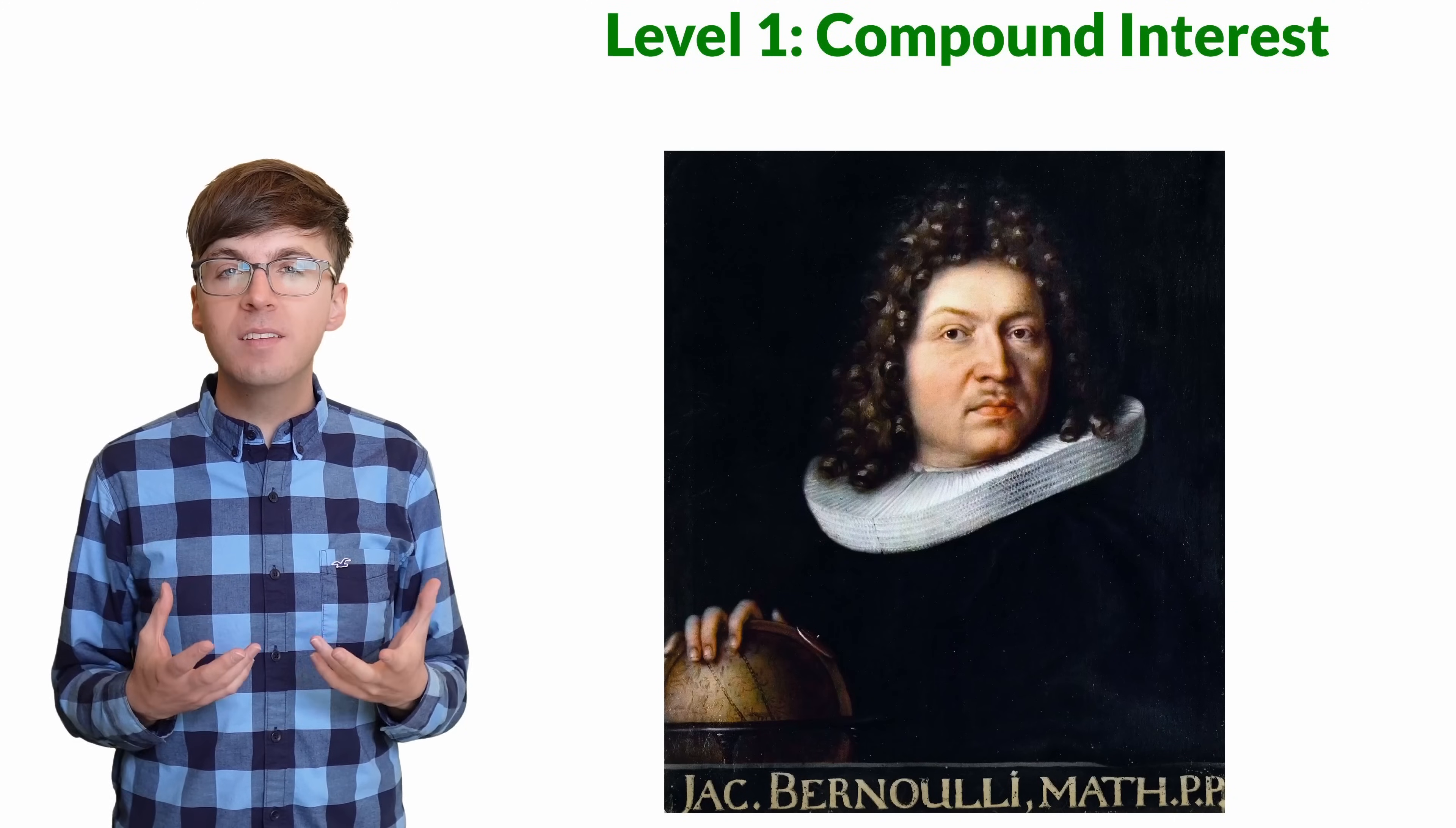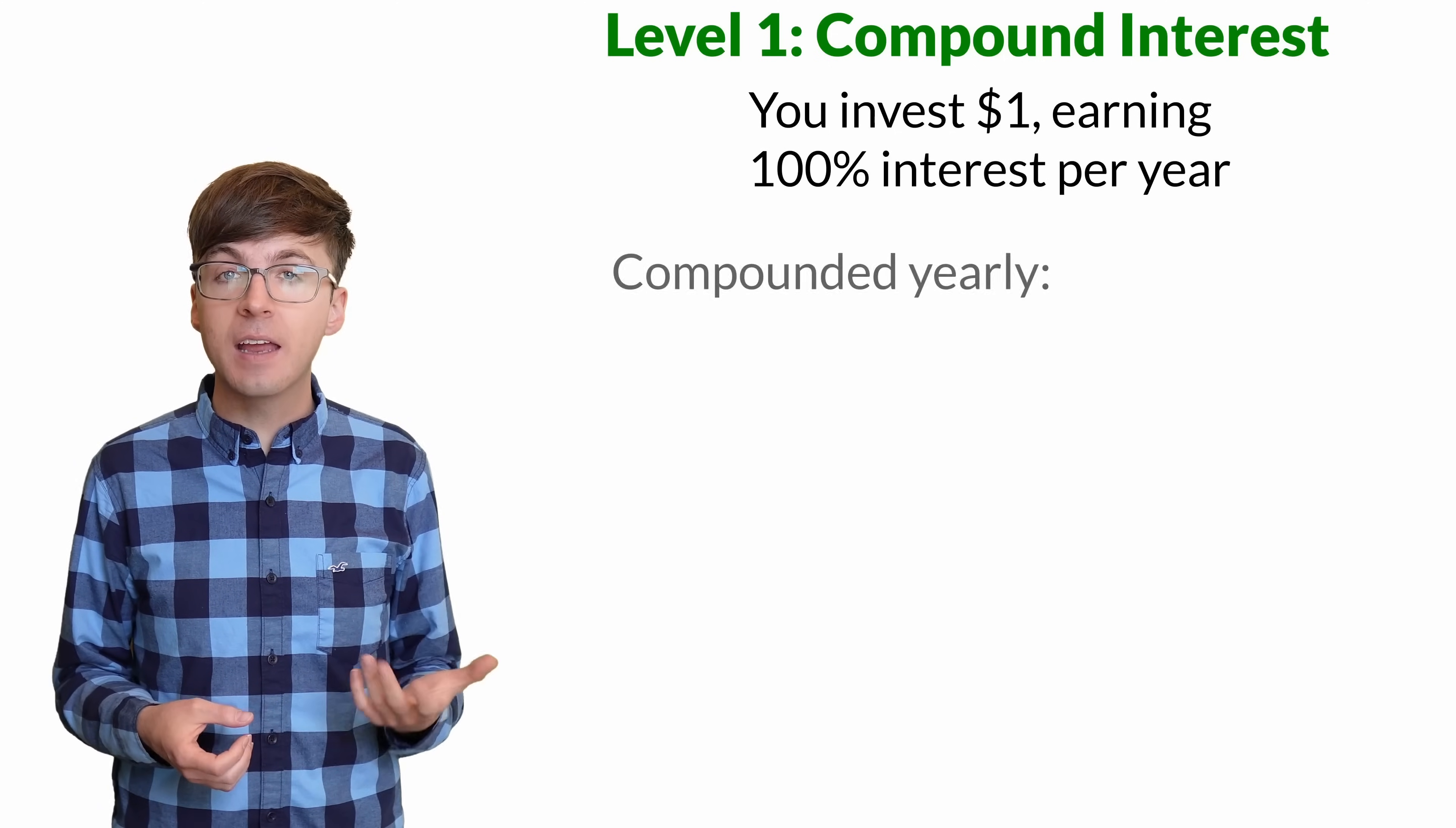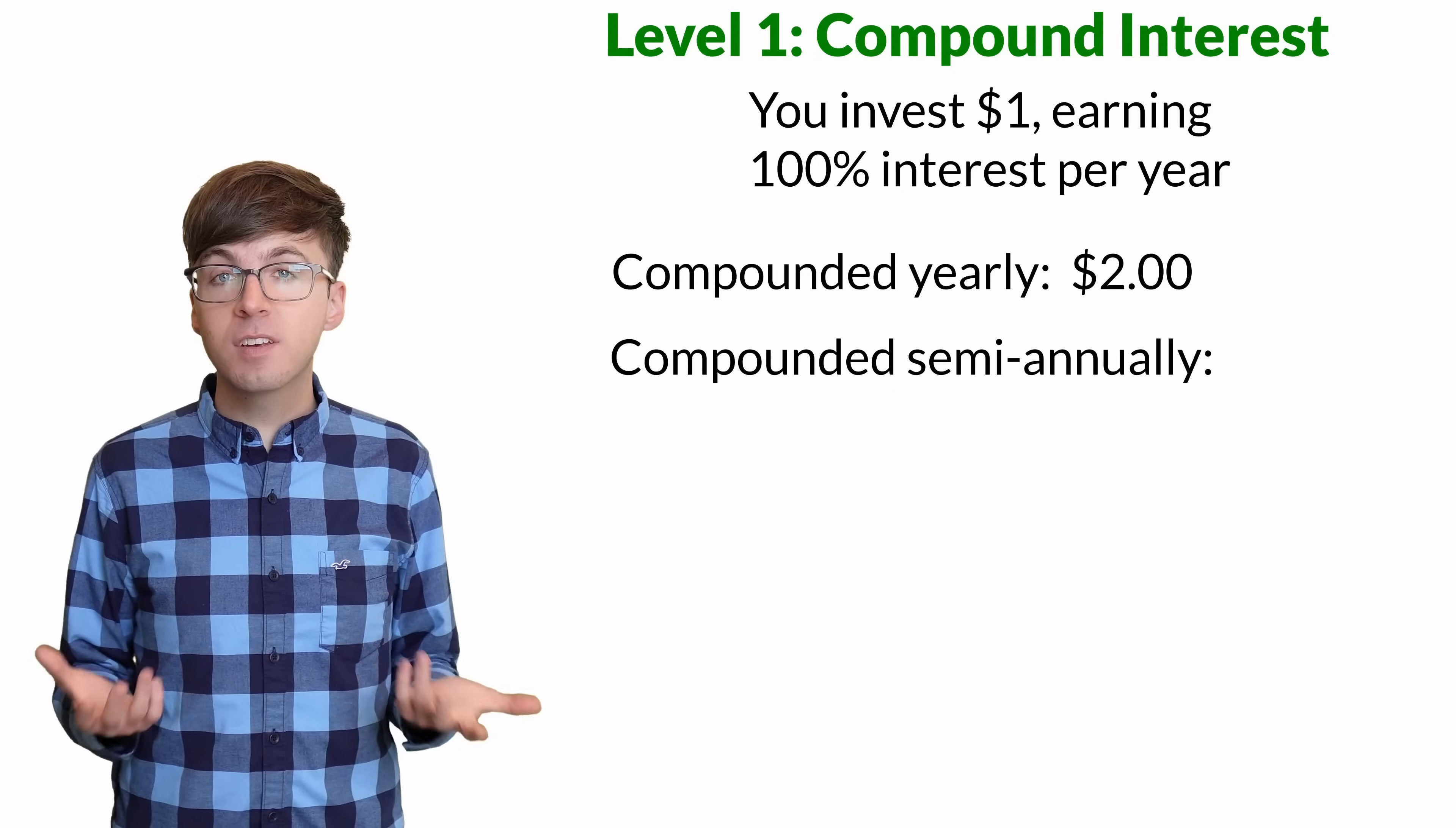For level one, let's see how Jacob Bernoulli discovered E by looking at compound interest. Let's say you invest one dollar, and your investment has an amazing 100% interest per year. If the interest is calculated at the end of one year, then you'll get one dollar in interest. So your account has doubled from one to two dollars. But what happens if your interest is calculated every six months?